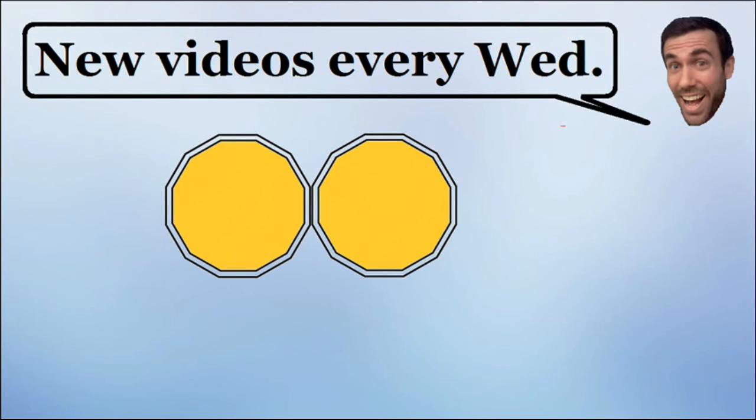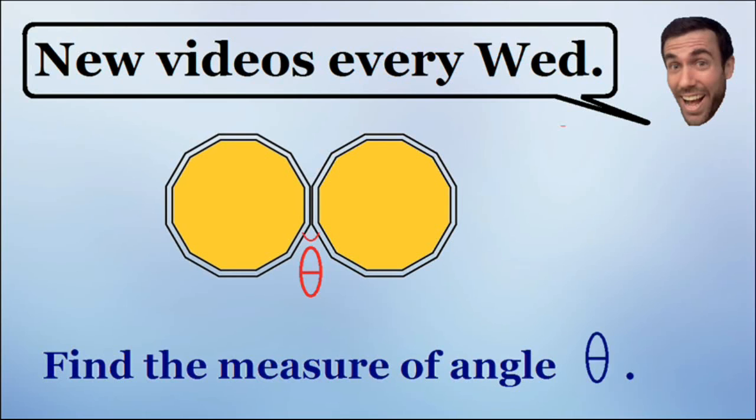As you can see, we have two 12-sided coins that are side by side, and the question is simple. Find the measure of the angle theta that lies in between these two coins.